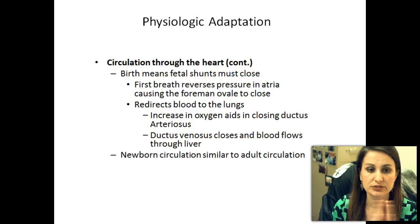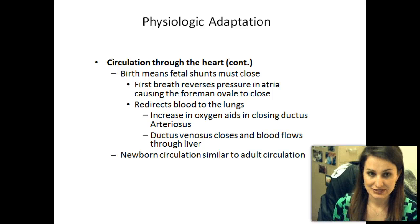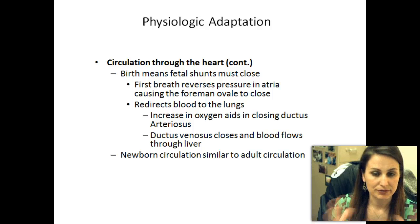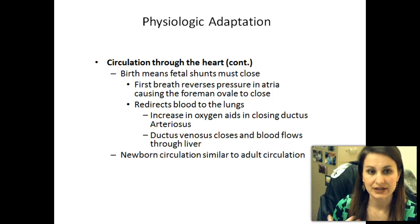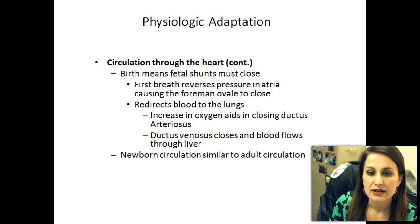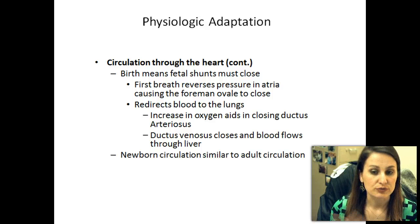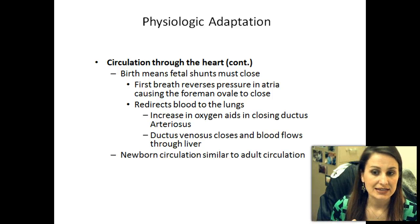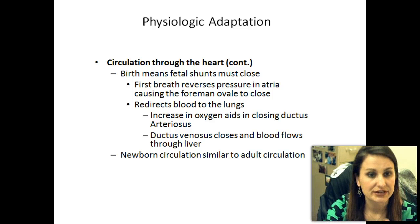That's in a normal baby. Of course, we'll talk about instances where it's not normal later on. All of a sudden, there will be more pressure on the left side of the heart, like yours and mine, than on the right side. That all happens whenever we clamp that cord and that baby takes its first breath. The first breath reverses pressures in the atrium, causes the foramen ovale to close, and redirects blood to the lungs — so now they're actually going to use their lungs. This increase in oxygen aids in closing the ductus arteriosus, and the ductus venosus closes and blood flows through the liver as well. Newborn circulation is then similar to adult circulation.